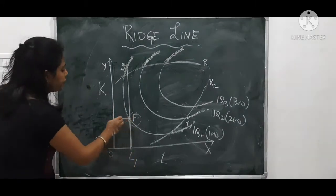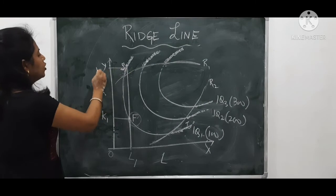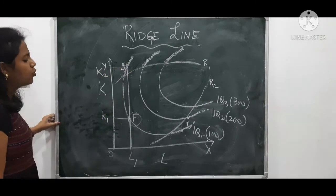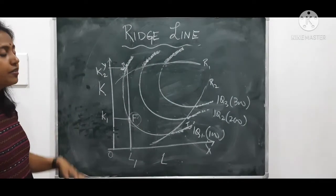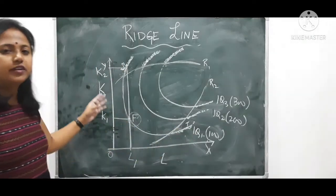But F requires less capital, but S requires more capital. It requires more capital, so S is not efficient, in spite of the fact that they are in the same isoquant curve.